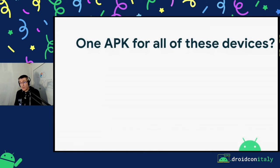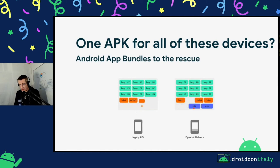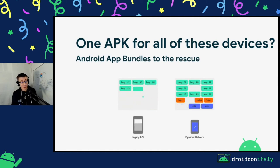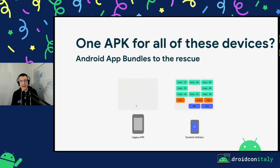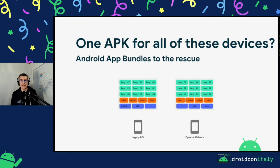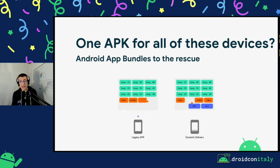So the question is: can we ship a single APK to support all these different interactions and use cases? Luckily, we have Android App Bundles, which will be a requirement for new applications in the summer of 2021. The idea is that I can build all the content I need for different use cases targeting different ABIs — x86, ARM, 64-bit, 32-bit, and so on. The Play Store takes care of delivering to the user only the parts of the application that are relevant to their particular device, saving bandwidth and storage space.